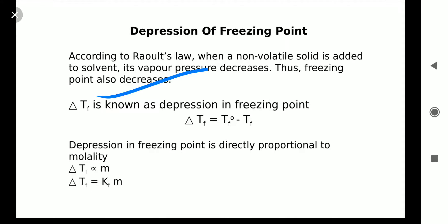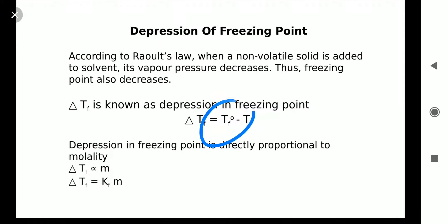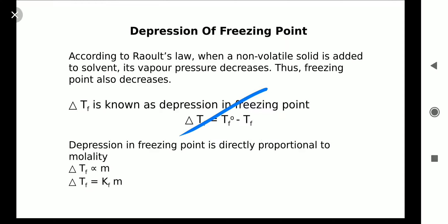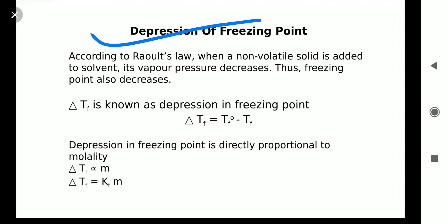Let us take delta Tf as the depression in freezing point. It equals Tf0 minus Tf, where Tf0 is the freezing point of the pure solvent and Tf is the freezing point of the solution. So the freezing point of a solution is less than that of the pure solvent. For example, when you add salt to ice, its freezing point decreases — this is depression in freezing point.